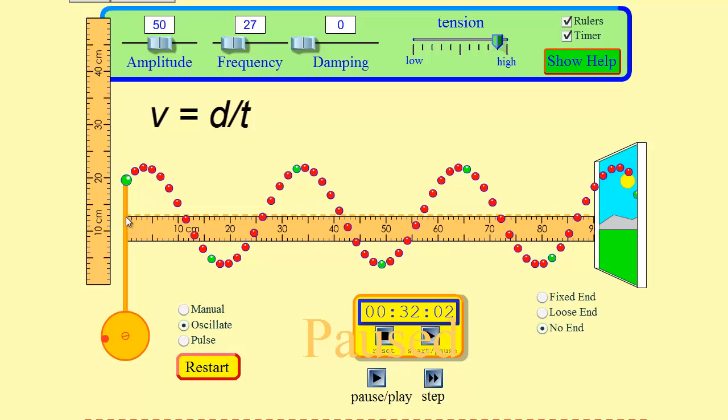The distance this wave travels from left to right to the start of this window is about 90 centimeters and time how long it takes that crest to start at the left and end at the right using a stopwatch. Very straightforward and I get my formula V is D over T.